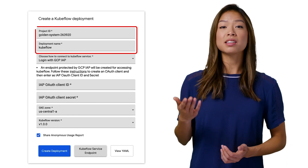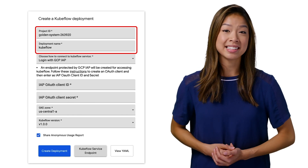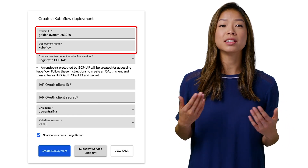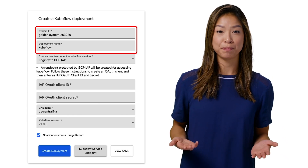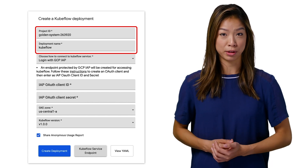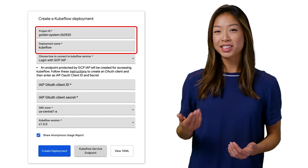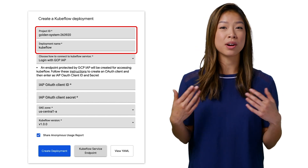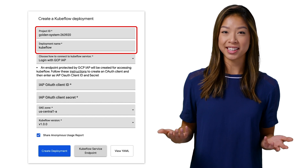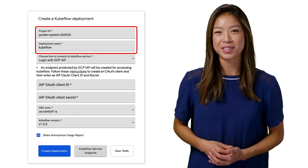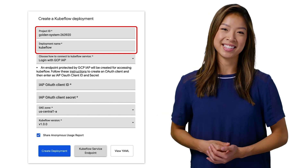The first box is where we'll put the ID of the Google Cloud project where we want to deploy Kubeflow, and the second contains the name for the deployment. We could change it if we had multiple clusters or other tools in the project, but the default name is Kubeflow, so let's leave that as is.